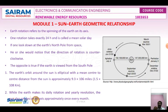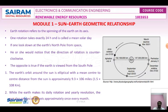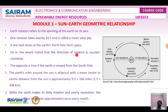If one looks down at Earth's north pole from space, the direction of rotation appears anti-clockwise. The opposite is true when viewed from the south pole. The orbit of the Earth around the sun is called Earth revolution. This celestial motion takes nearly 365.25 days for Earth to complete one cycle around the sun.